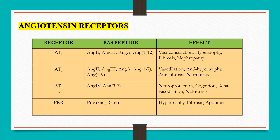Angiotensin 4 receptors are involved in neuroprotection, cognition, renal vasodilation, and natriuresis. Prorenin and renin receptors produce hypertrophy, fibrosis, and apoptosis.